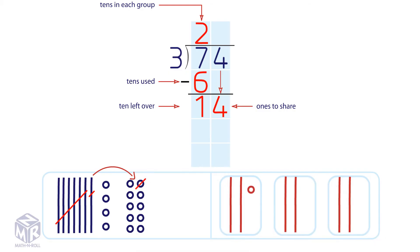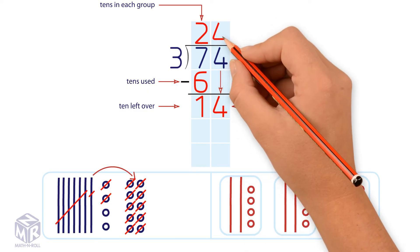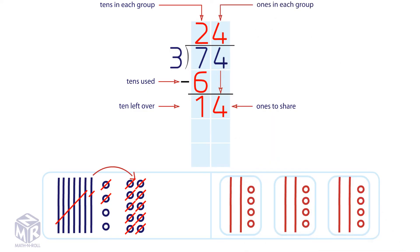Share the ones equally among the 3 groups. Cross out the ones you use. There are 4 ones in each group. 12 ones were used.